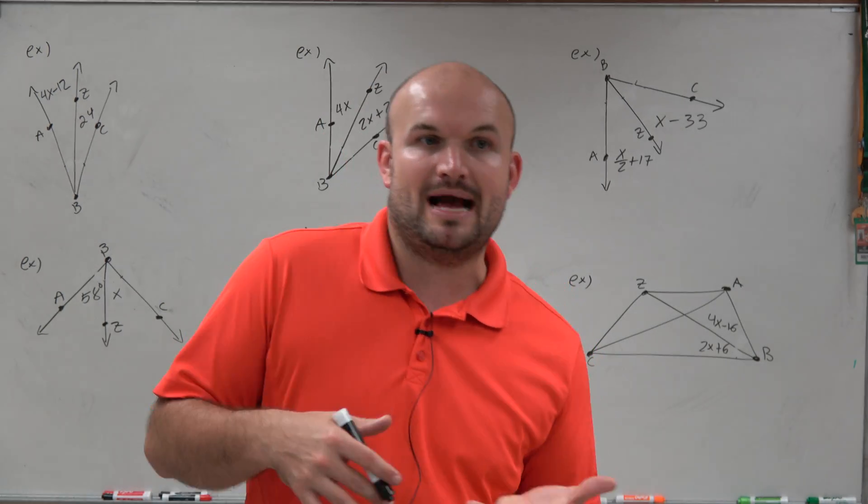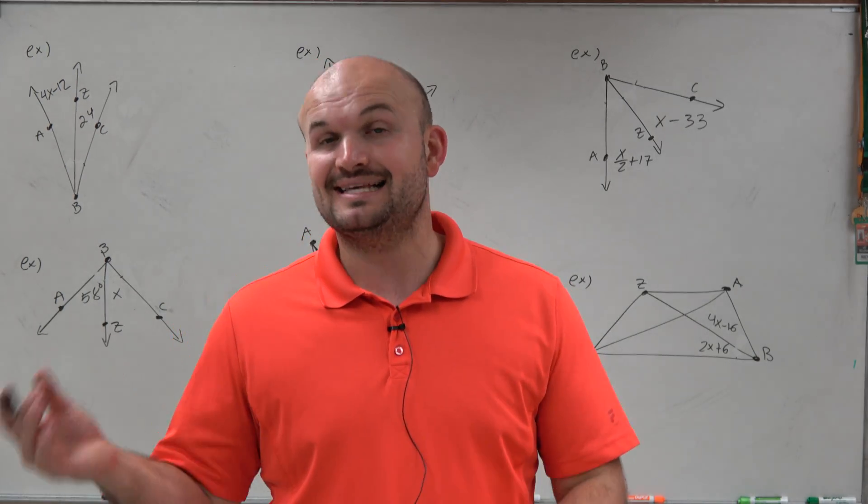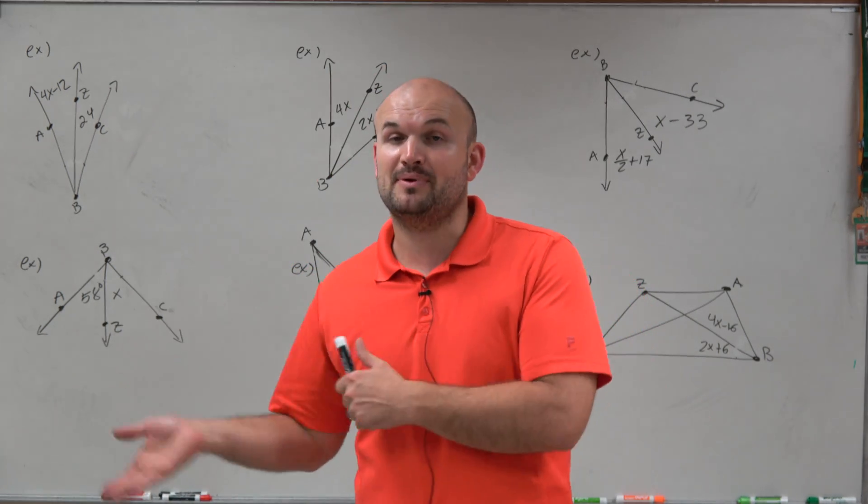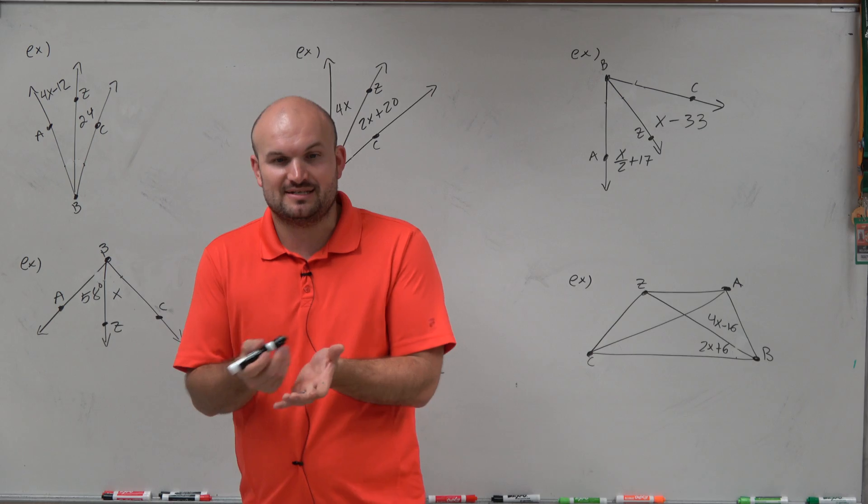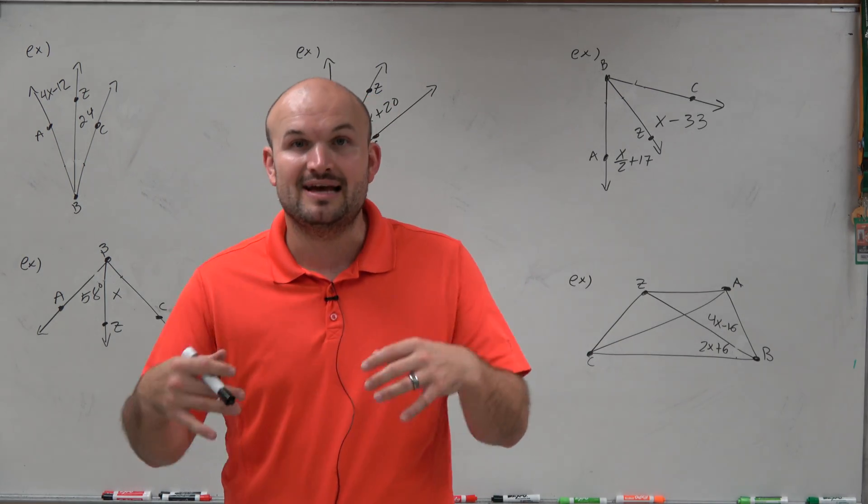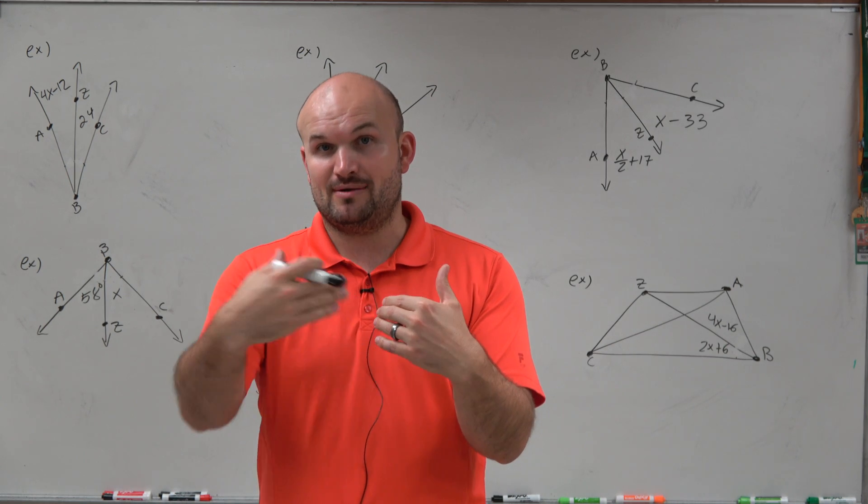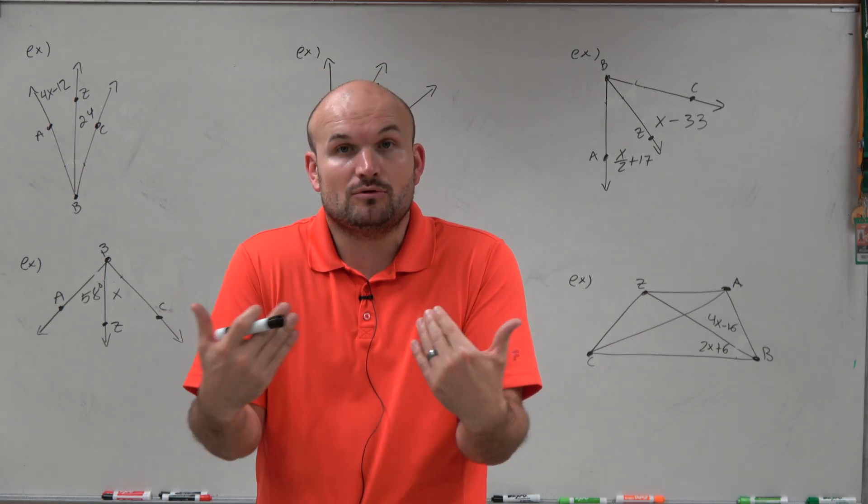And that's usually typically what will happen, is you'll be given a problem and they'll say this line is an angle bisector. So what exactly does that mean? Well, in my previous video, I explained that the angle bisector basically cuts your angle in half. It makes both angles that you create with the angle bisector congruent or equal to one another.